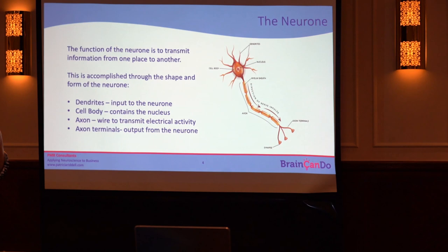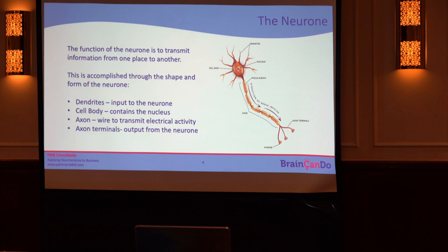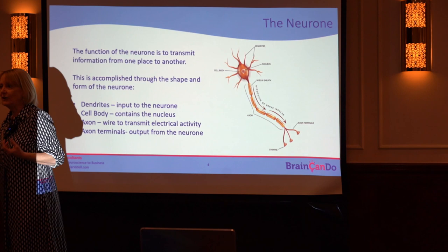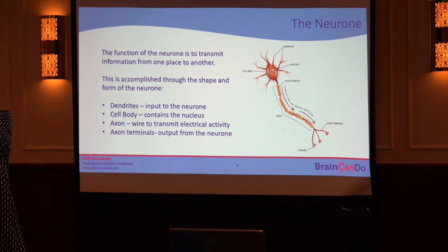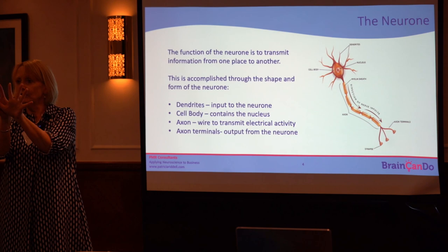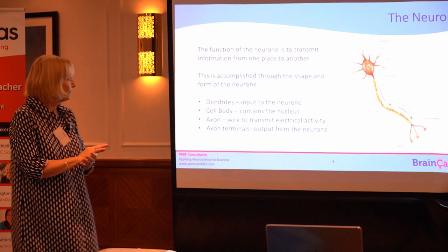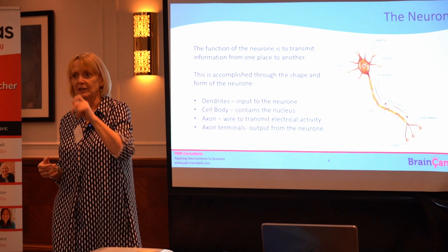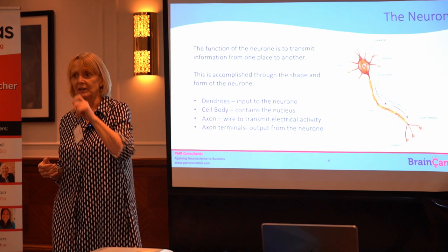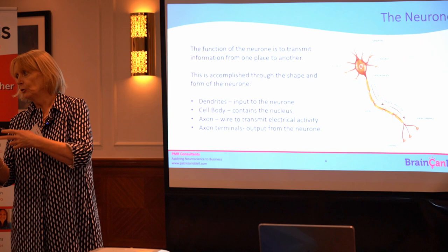A neuron transfers information — it takes information from one place to another, and integrates inputs from different places. To get information into the neuron you need finger-like projections called dendrites at the top of the neuron. These dendrites are fed by lots of other neurons in the network, taking in information from many different places. The next bit is the cell body, which contains the nucleus with the chromosomes and DNA needed to build the factories that produce all the neuron's components.